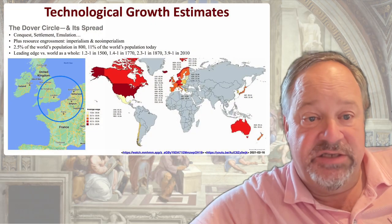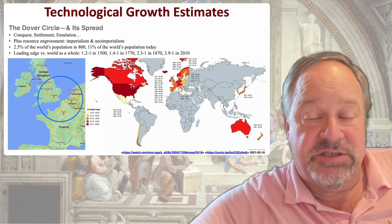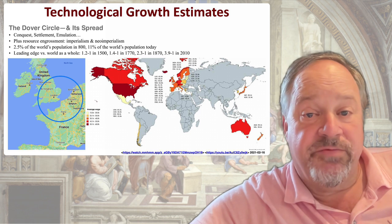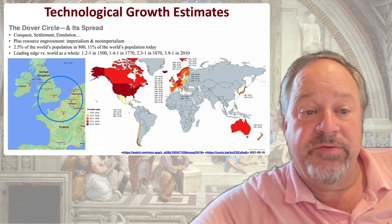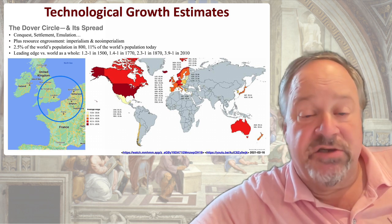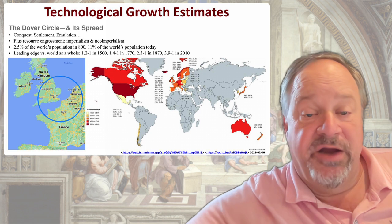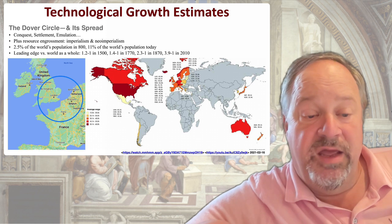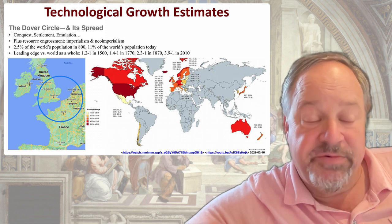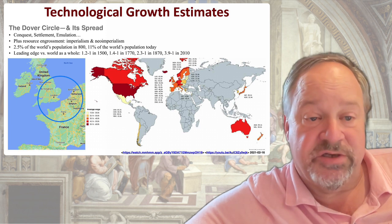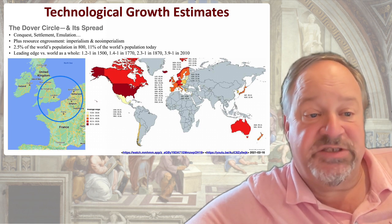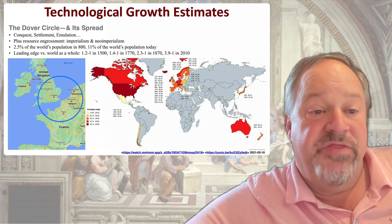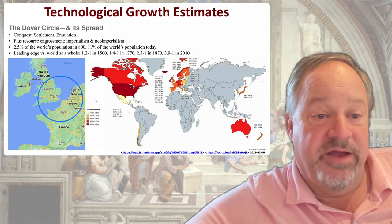In the background, over 1870 to 2010, we have our estimates of the accumulating technological power of humanity, and also the rising distinction between the global north and the global south. Technological growth estimates are 2% per year on average from 1870 to 2010, doubling every 35 years. The global north really starts out as the Dover circle — those societies and polities headquartered within 300 miles of Dover.